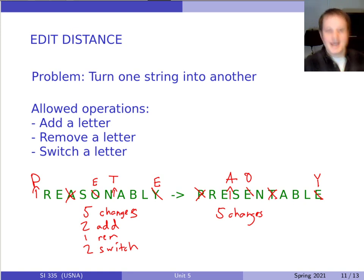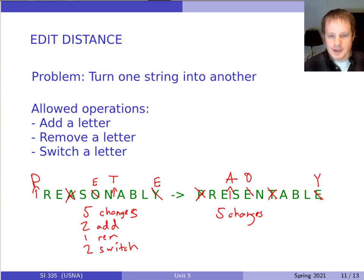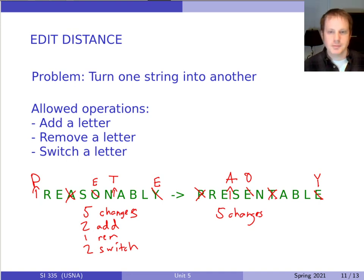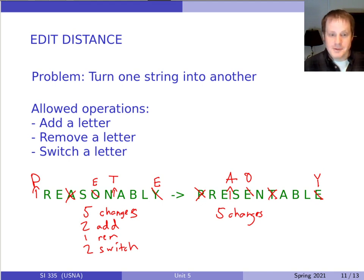One cool thing about this problem is that it works the same but opposite going from the other string backwards. If we think about changing presentable into reasonably: where I added the P, now I remove it; where I removed an A, now I add one; where I changed O to E, now I change E to O; adding T becomes removing T; and I change E to Y. So it's also five changes — the same five changes — just in the other direction, where adds become removes and removes become adds. That's an important helpful way to think about this problem. That's the edit distance problem.